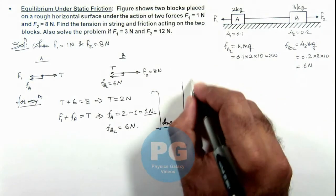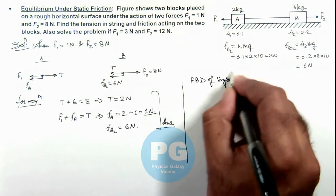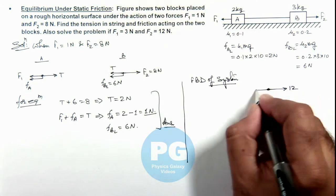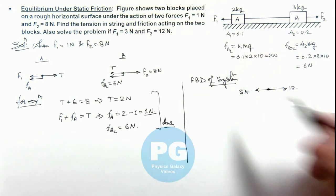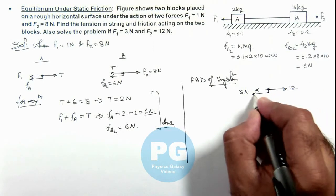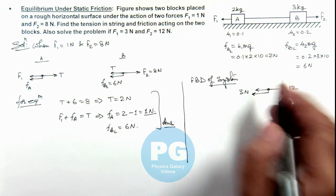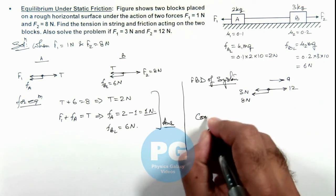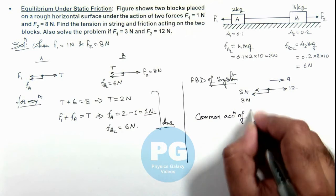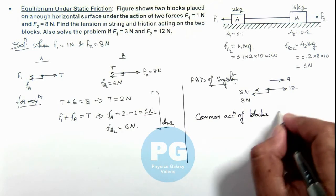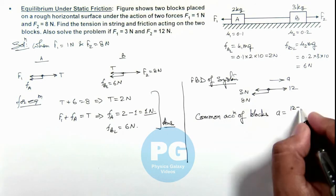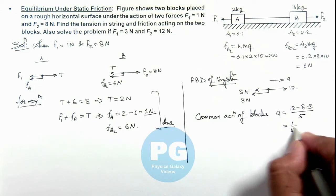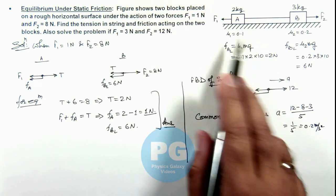So here we draw the free body diagram of the system. The total force toward right is 12 newton and toward left it is 3 newton. Tension being the internal force, no need to draw it here. The friction on both the blocks will act in the backward direction, giving F_A plus F_B equal to 8 newton. So the whole system will be moving toward right with acceleration a. The common acceleration of the blocks is a equals 12 minus 8 minus 3 divided by the total mass of 5, which gives 1 by 5, that is 0.2 meter per second squared.